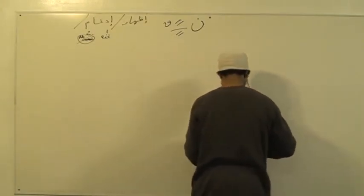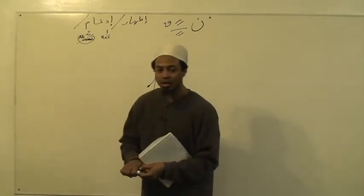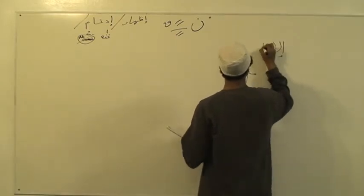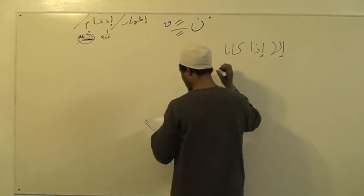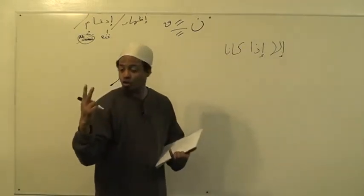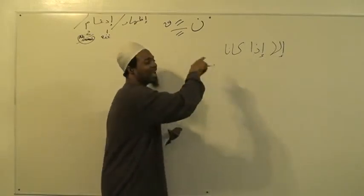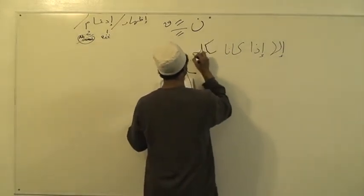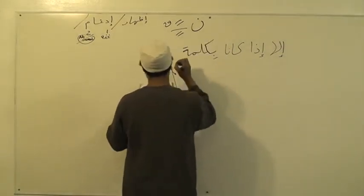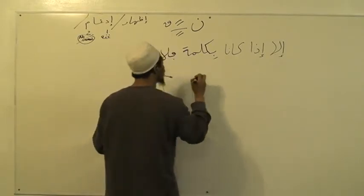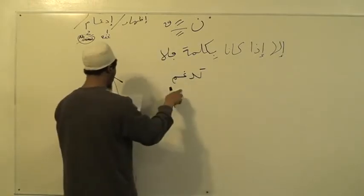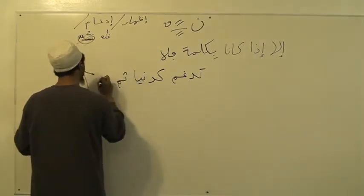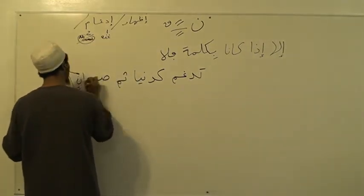إِلَّا إِذَا كَانَا بِكَلْمَةٍ فَلَا تُدْغِمْ كَدُنْيَا ثُمَّ سِنْوَانٍ تَلَى — it says إِلَّا, meaning there is no Gunnah. إِلَّا إِذَا كَانَا — كَانَا refers to two. Meaning if the Nun and one of the letters of يَنْمُوا come together in one word — بِكِلْمَةٍ — then do not make Idgham.